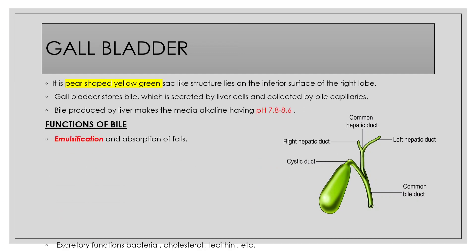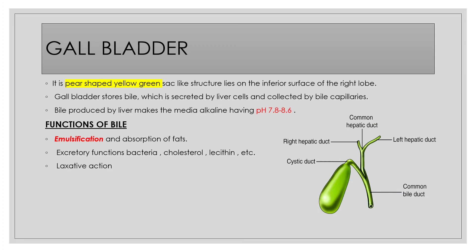Bile is stored in the pear-shaped, sac-like structure known as the gallbladder. The major functions of the gallbladder: it stores bile, and the bile produced in the liver makes the medium alkaline in nature. After passing through the acidic environment of the stomach, food reaches the gallbladder region where bile helps in the emulsification of fat, excretion of bacteria, cholesterol, lecithin, etc., and also provides a laxative and antiseptic action.